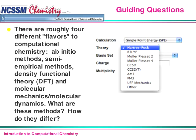The guiding question that addresses this week's topic is question number four from the list we gave you several weeks ago. That question says: there are roughly four different flavors to computational chemistry: